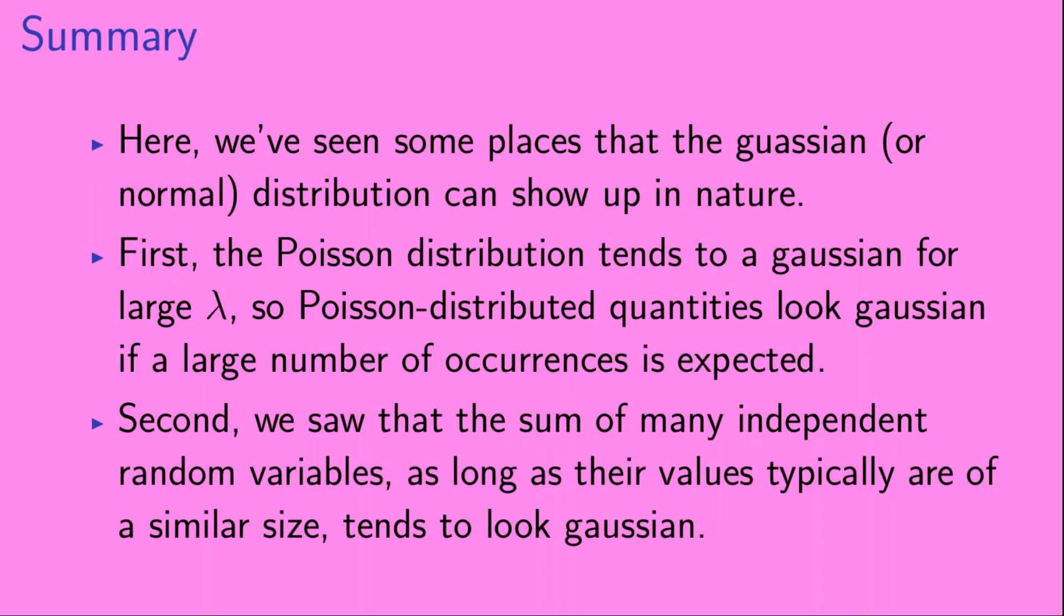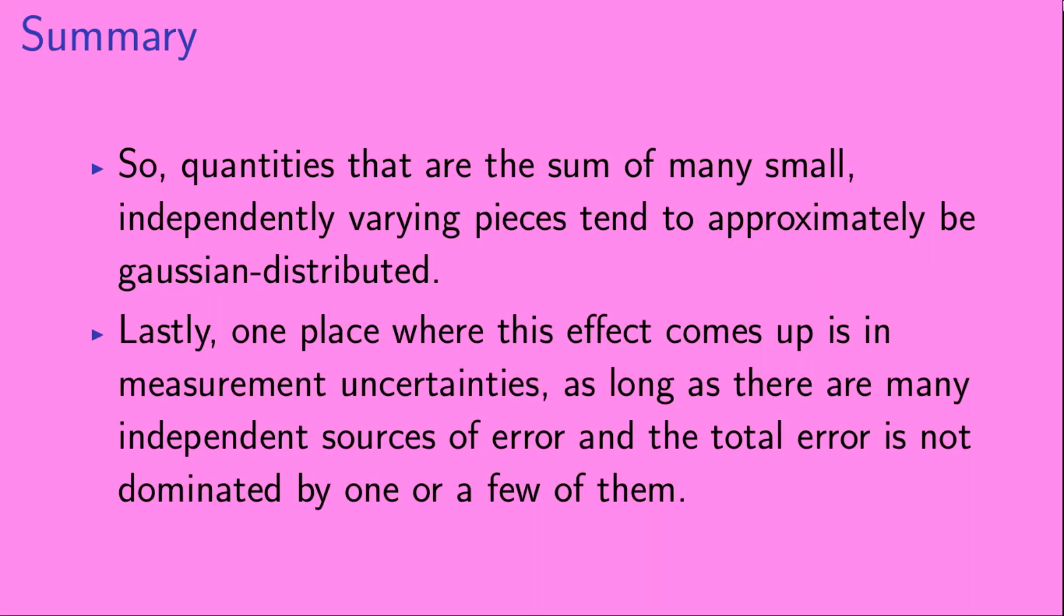Okay, so now let's summarize. Here, we've seen some places that the Gaussian, or normal distribution, can show up in nature. First, the Poisson distribution tends to a Gaussian for large lambda, so Poisson distributed quantities look Gaussian if a large number of occurrences is expected. Second, we saw that the sum of many independent random variables, as long as their values typically are of a similar size, tends to look Gaussian. So, quantities that are the sum of many small, independently varying pieces, tend to approximately be Gaussian distributed. And lastly, one place where this effect comes up is in measurement uncertainties, as long as there are many independent sources of error, and the total error is not dominated by one or a few of them.